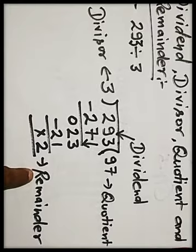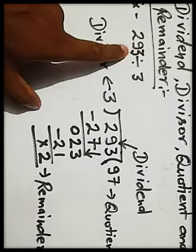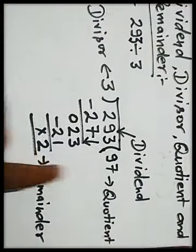Clear? In this question, 3 is divisor. 293 is dividend. 97 is quotient. And 2 is remainder.